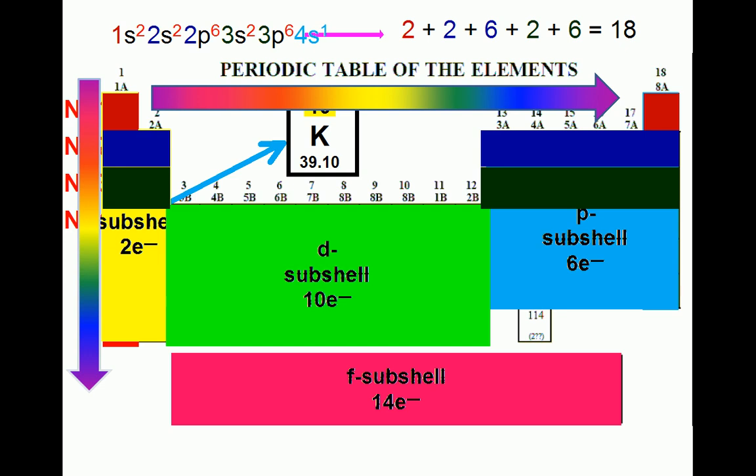All we need to do now is place the 19th electron. According to the periodic table, the next subshell we encounter is the 4s, which is then followed by the 3d subshell.